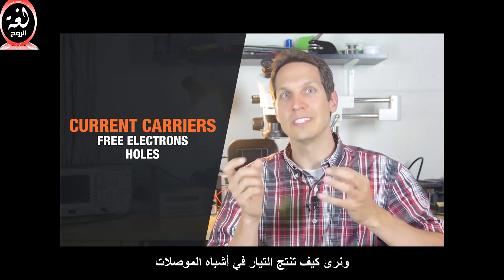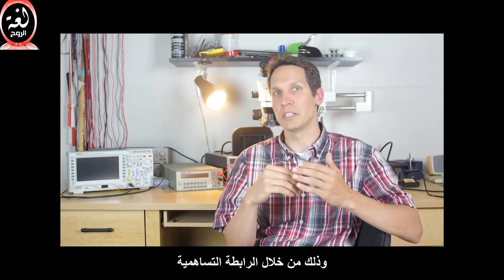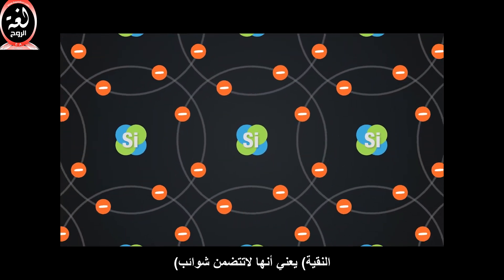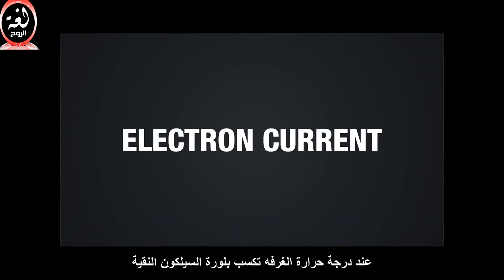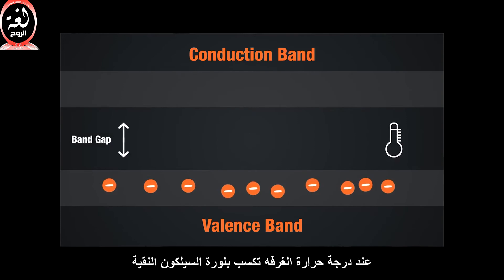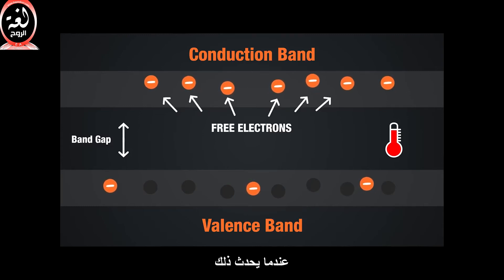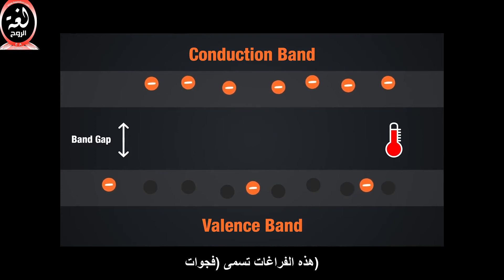Atoms may combine to form a solid crystalline material through covalent bonding. For example, a silicon atom covalently bonds with four adjacent silicon atoms to form an intrinsic silicon crystal — intrinsic because it doesn't contain impurities, and a crystal because there is a pattern in how the atoms are connected. At room temperature, intrinsic silicon crystal gains enough heat energy that enables some of the valence electrons to jump into the conduction band, becoming free electrons. When this happens, vacancies are left in the valence band within the crystal. These vacancies are known as holes.